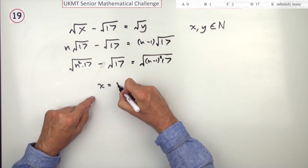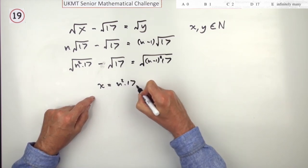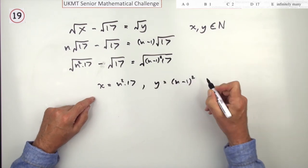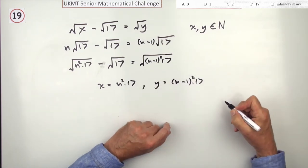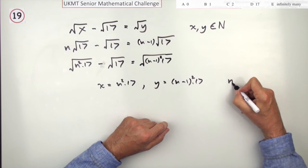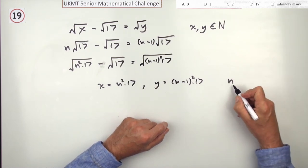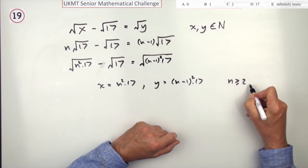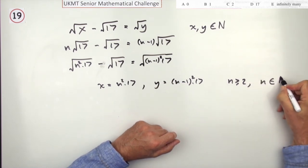So, there's your pair. x is n squared times 17, and y, the corresponding y would be one less, the number one less squared, times 17. But, for this part here, n would have to start at 2, because I'm not allowed to have the 0. So, n greater than or equal to 2, n being a natural number.